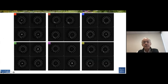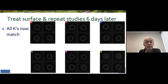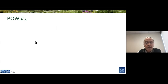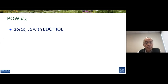Looking at the raw data from the Lenstar, you can see the missing mires in the same area the IOL Master was missing them. He had some dry spots on the cornea, so I treated the dryness. Only six days later there's still a little bit of irregularity but much, much better — all the mires are in fact in place. I put an E-DOF in this patient and it was right on target: 20/20 J2.